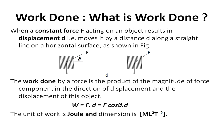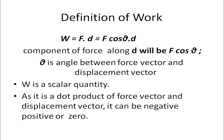Mathematically, we can represent this as W = F · D = F cos θ · D. The unit of work is joule and the dimension is ML²T⁻². The component of force along D is F cos θ, where θ is the angle between the force vector and the displacement vector. W is a scalar quantity — it has no direction but has a magnitude. Since it is a dot product of force vector and displacement vector, it can be negative, positive, or zero.